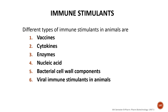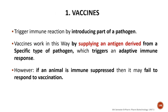There are different immunostimulants which can be used to stimulate the immune system. The first one is vaccines, the second one is cytokines, then enzymes, nucleic acids, bacterial cell wall components, and viral immunostimulants in animals. Let's see them one by one.